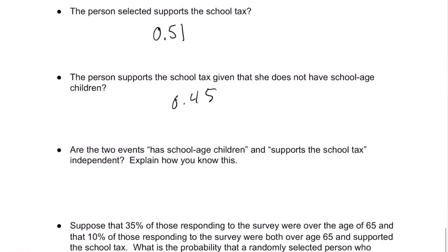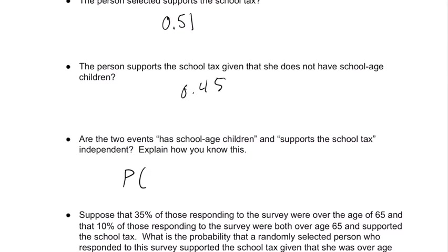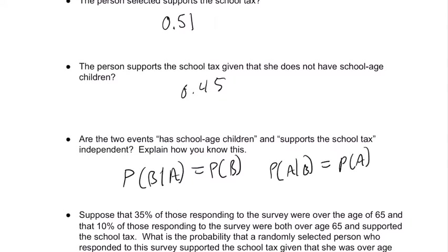Are the two events — has school children and supports school tax — independent? How do you know? They're not independent because the probability of support given no school-age children is not the same as the probability of just support. If P(B|A) does not equal P(B), or if P(A|B) does not equal P(A), they're not independent.